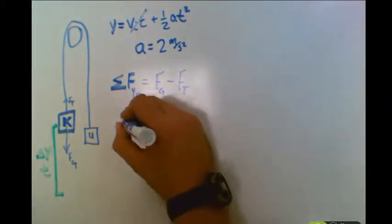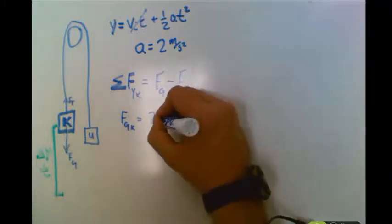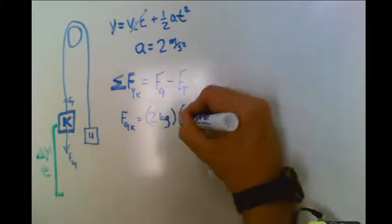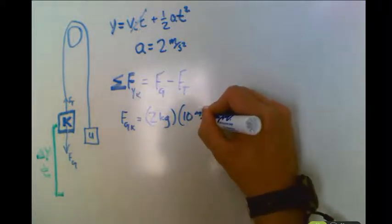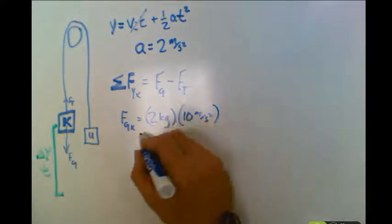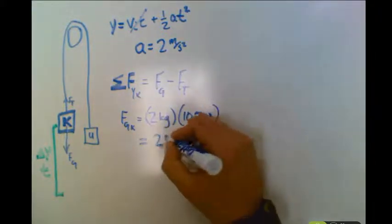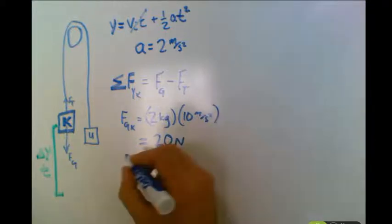So the force of gravity of the known is mass times the acceleration due to gravity. Newton's second law, mass times acceleration. And the force of gravity on that object is 20 newtons, more or less.